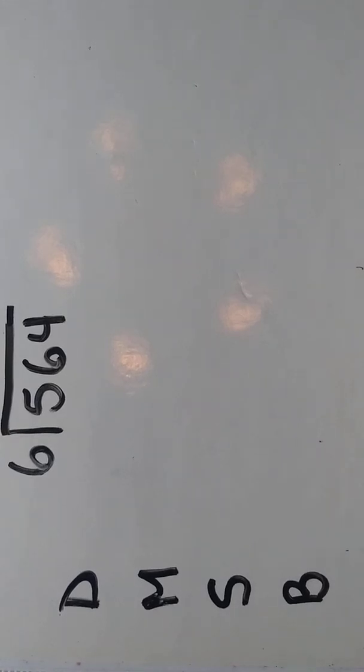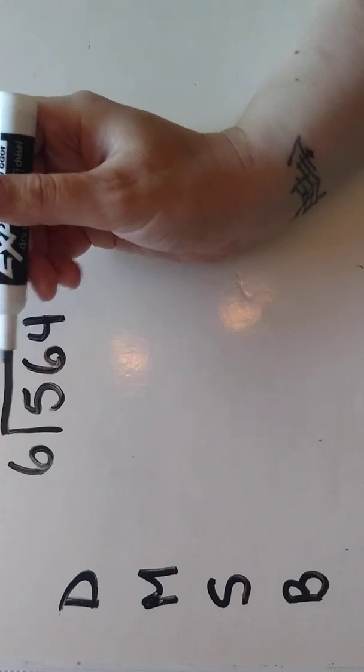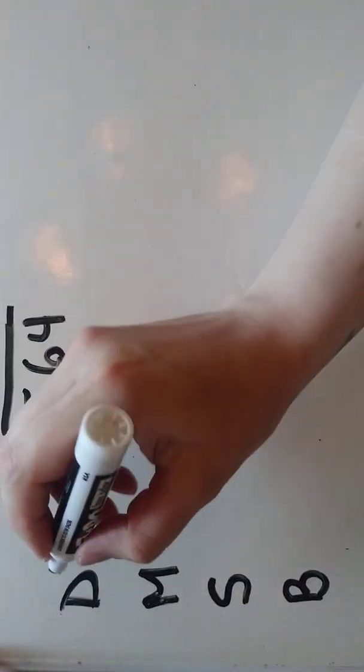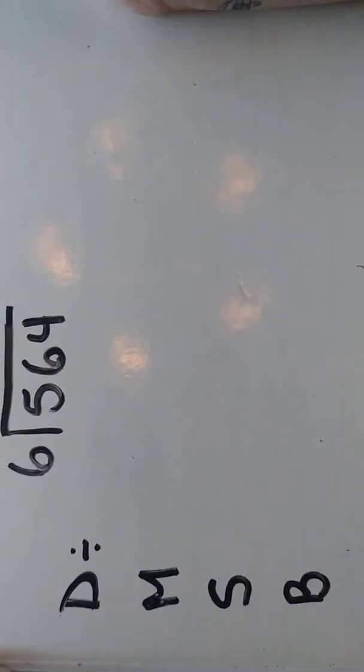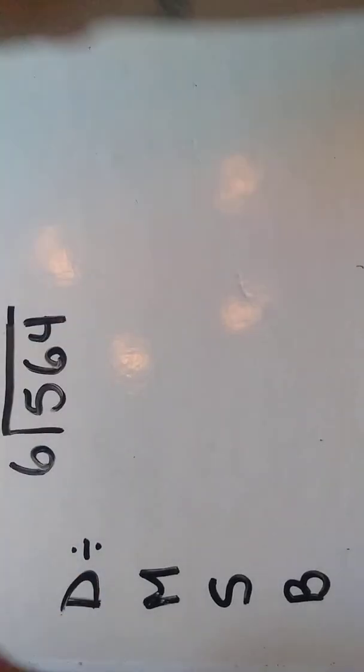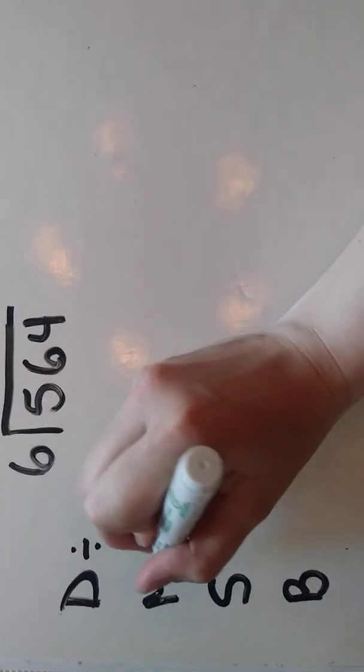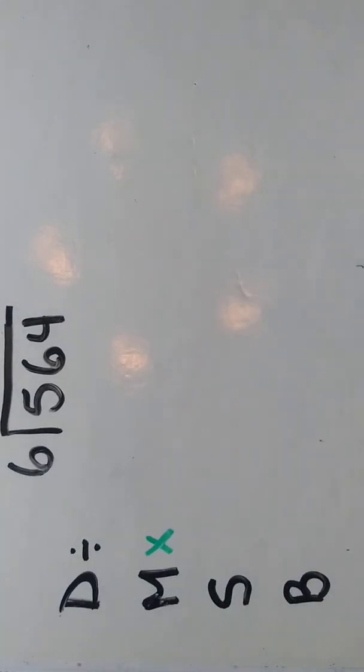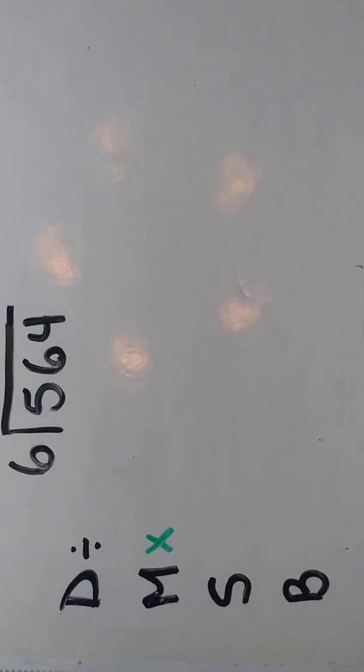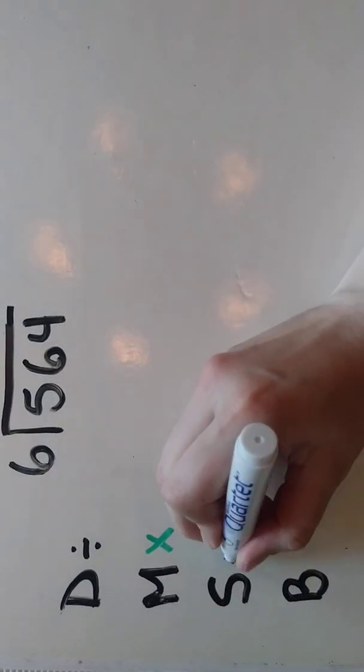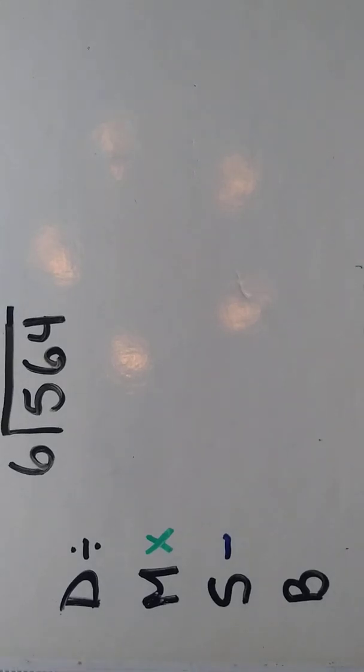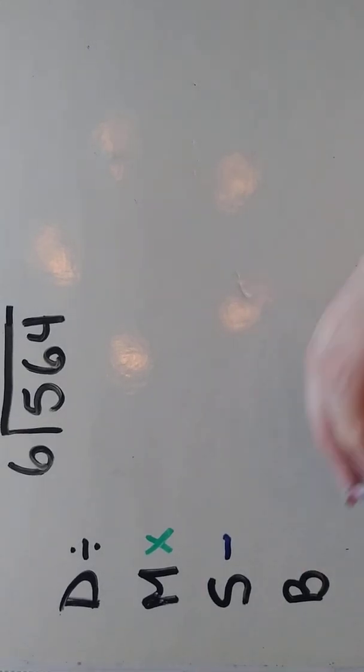Each letter is going to stand for one of the steps. Our D is division, our M is multiplication, our S is subtraction, and our B is bring down.